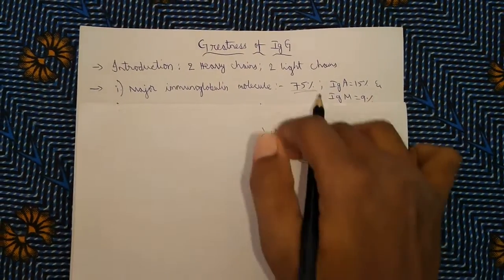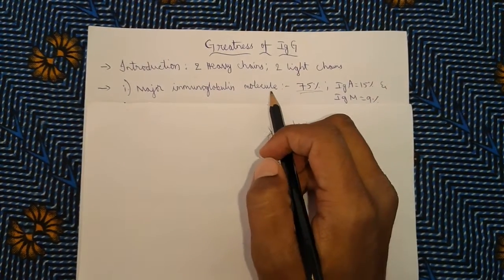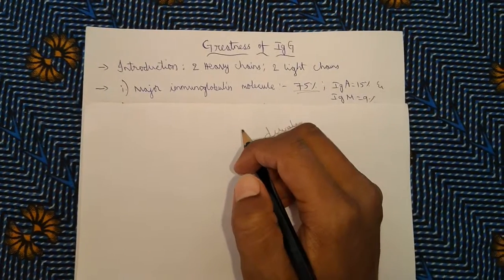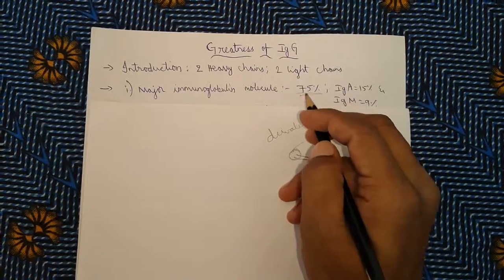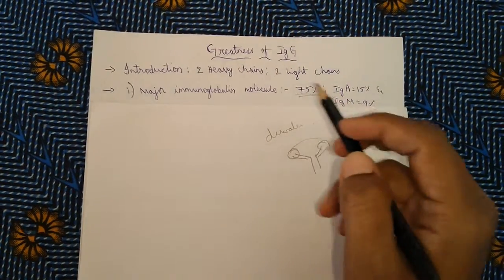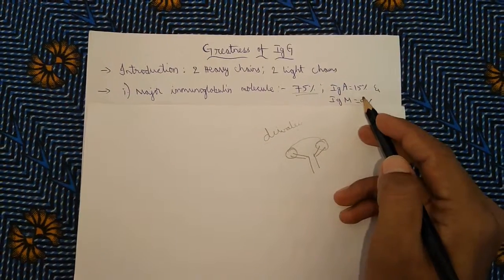The first and foremost characteristic is major immunoglobulin molecule. We know that all the immunoglobulins are present in serum. Among them, 75% of immunoglobulins are of IgG type. The second kind of immunoglobulin present is IgA, which is only 15%, and IgM is 9%.